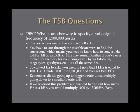What is another way to specify a radio signal frequency of 1,500,000 hertz? The correct answer is 1,500 kilohertz. You need to know how to convert hertz to kilohertz, megahertz, and gigahertz — similar to kilobytes, megabytes, gigabytes in computer memory. Since 1 kilohertz equals 1,000 hertz, divide 1,500,000 by 1,000 to get 1,500 kilohertz. Remember: going to a bigger metric unit, you divide; going to a smaller unit, you multiply.